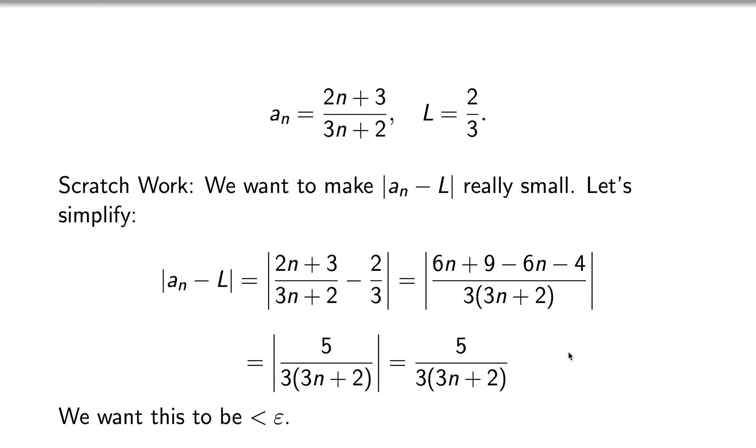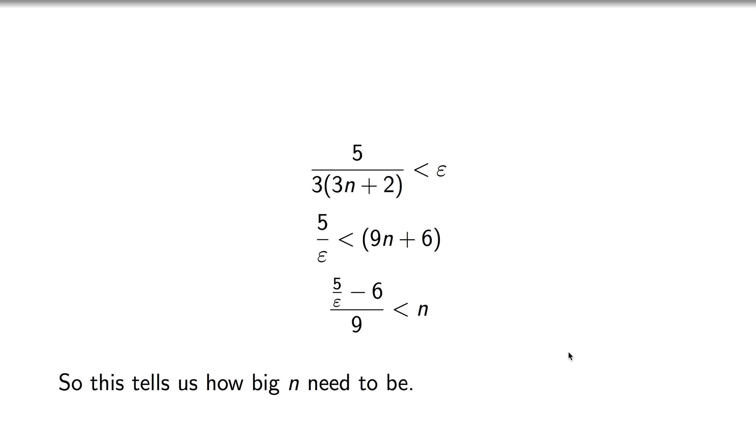We want this number to be smaller than epsilon. Our intuition says that if n is a really huge number, then we can make this as small as we like. We can just solve this because this is a linear equation. If this is smaller than epsilon, we can solve for n. We move the n to the right-hand side and put the epsilon on the left, subtract 6 from both sides and divide by 9. This gives us an inequality for n.